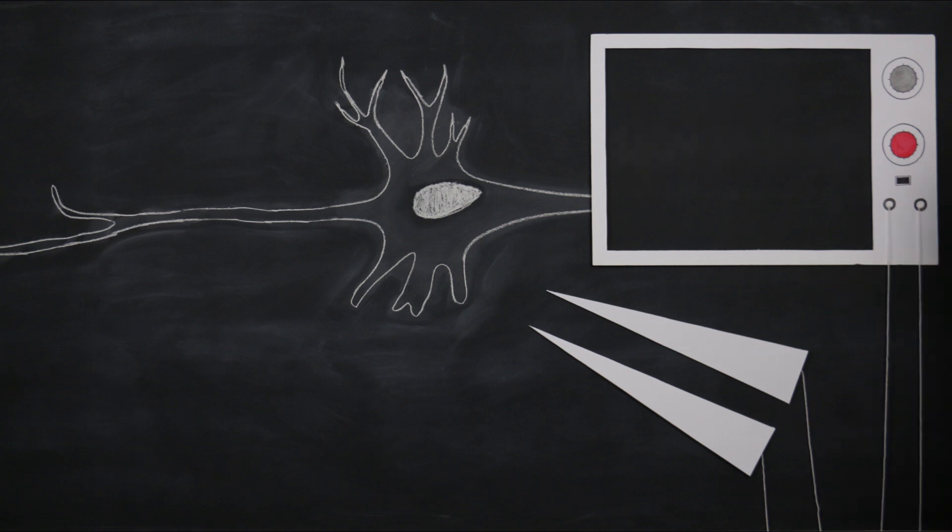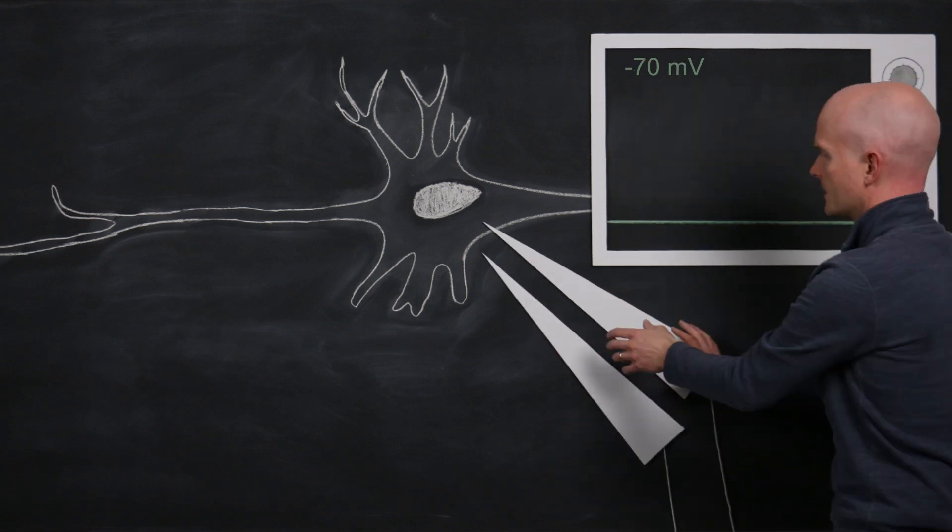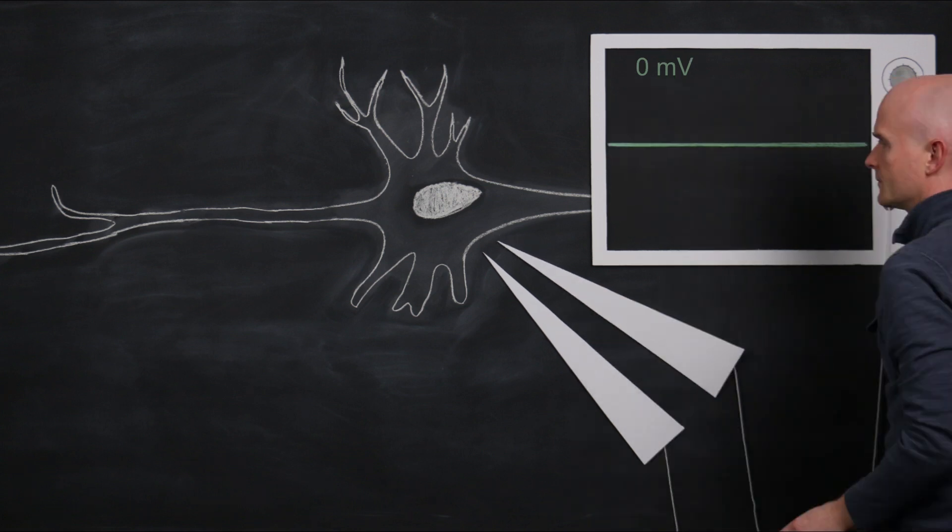To record a neuron's membrane potential, it is necessary to position the tip of one recording electrode inside the neuron and the tip of another recording electrode outside the neuron in the extracellular fluid. The difference in charge between the interior and exterior of a cell is the membrane potential. When both electrode tips are in the extracellular fluid, the voltage difference between them is zero.